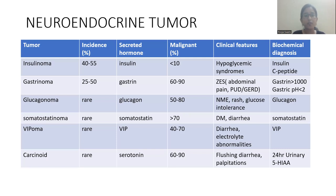The most common neuroendocrine tumor is the non-functional type. Among functional neuroendocrine tumors, insulinoma is the most common, presenting with hypoglycemic syndrome; biochemical diagnosis is based on insulin and C-peptide levels. The second most common functional neuroendocrine tumor is gastrinoma, which secretes gastrin and presents with Zollinger-Ellison syndrome, featuring abdominal pain, peptic ulcer disease, or GERD. Biochemical diagnosis is based on gastrin greater than 1,000 and gastric pH less than 2. Other less common types include glucagonoma, somatostatinoma, VIPoma, and carcinoid.